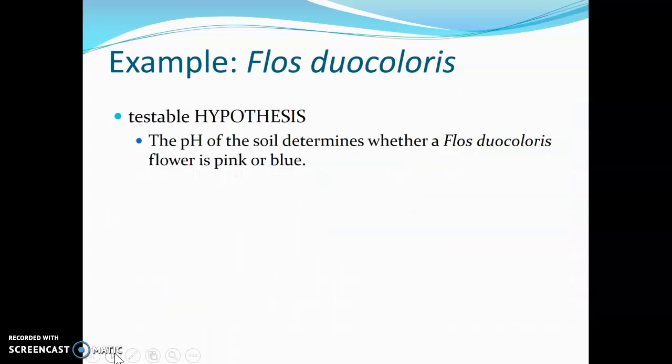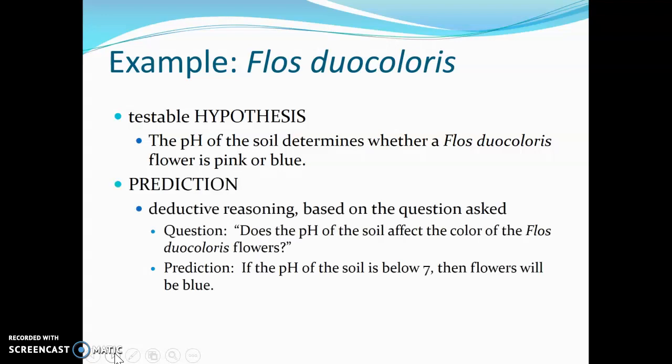So come up with a testable hypothesis: does the pH of the soil determine whether a Flos duocolorus flower is pink or blue? So there is a testable hypothesis — there is a way to examine this and figure out whether it is correct. So we make a prediction. Based on our question — does the pH of the soil affect the color of the flowers — we are going to predict that if the pH of the soil is below 7, then the flowers are going to be blue.